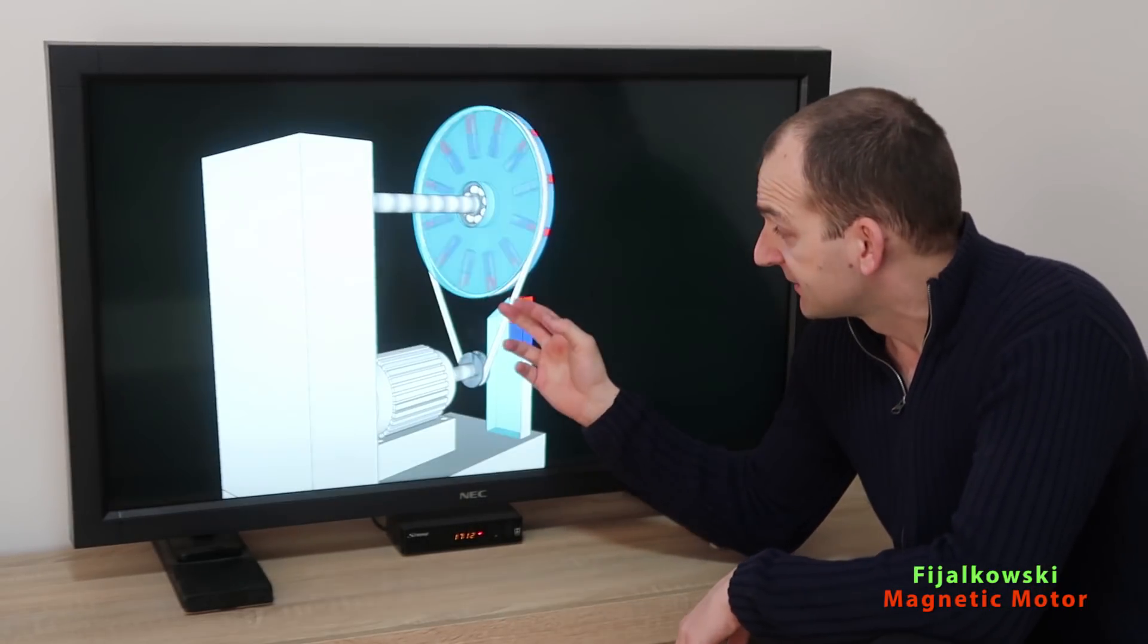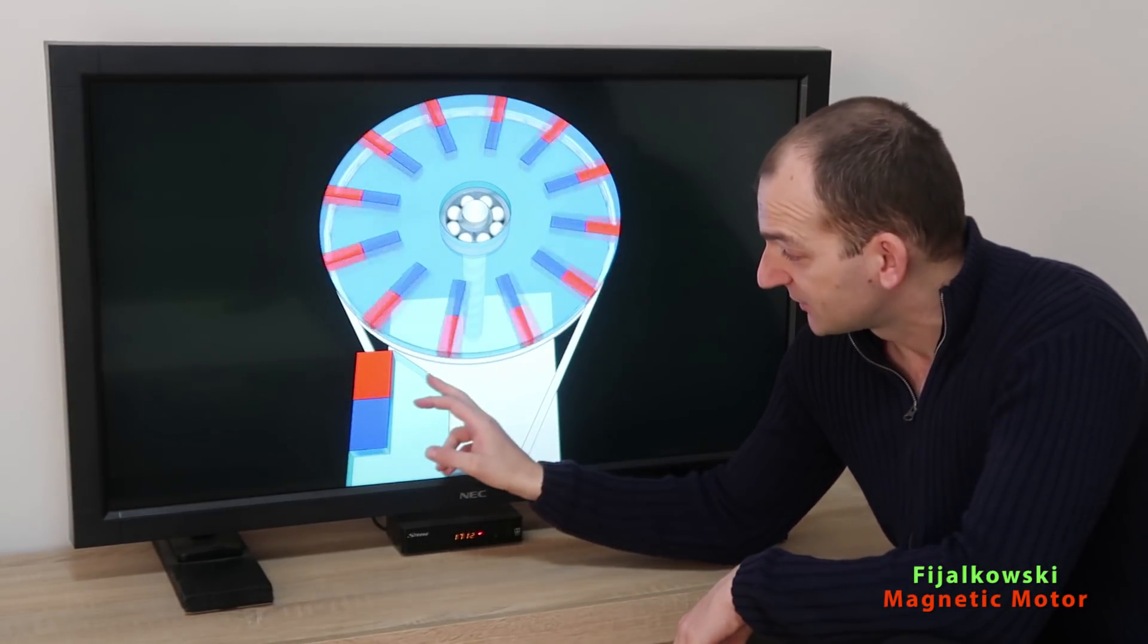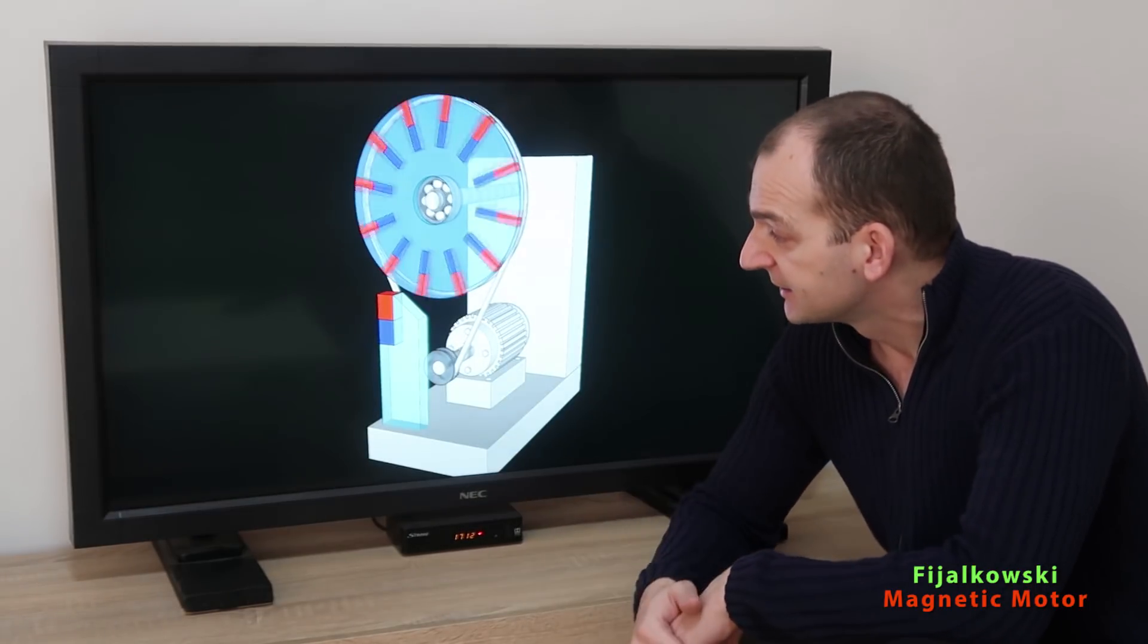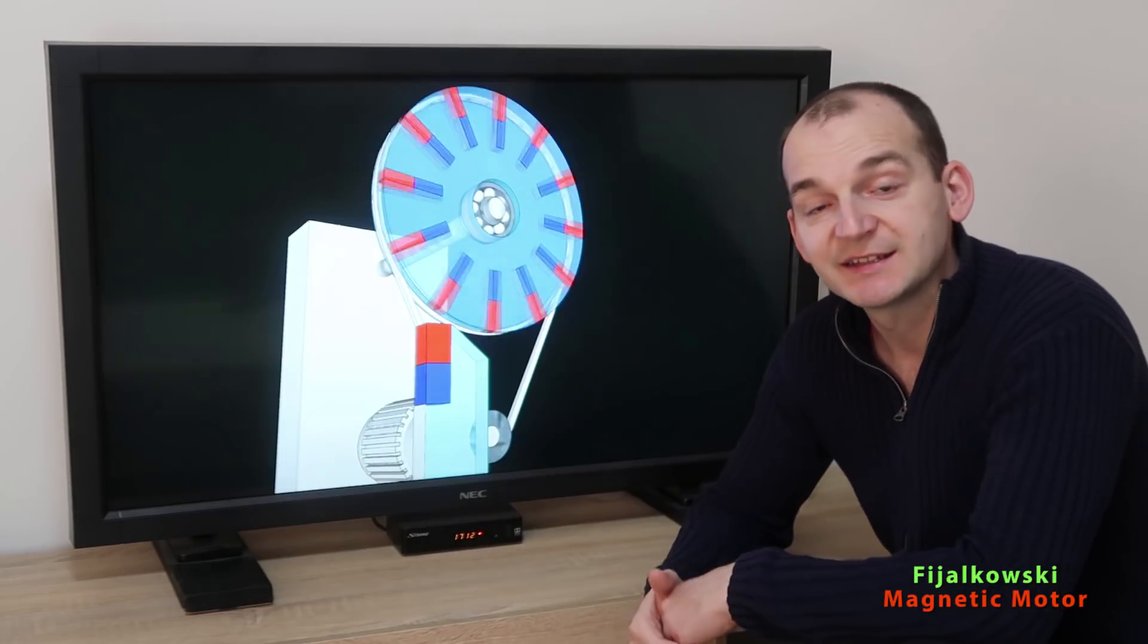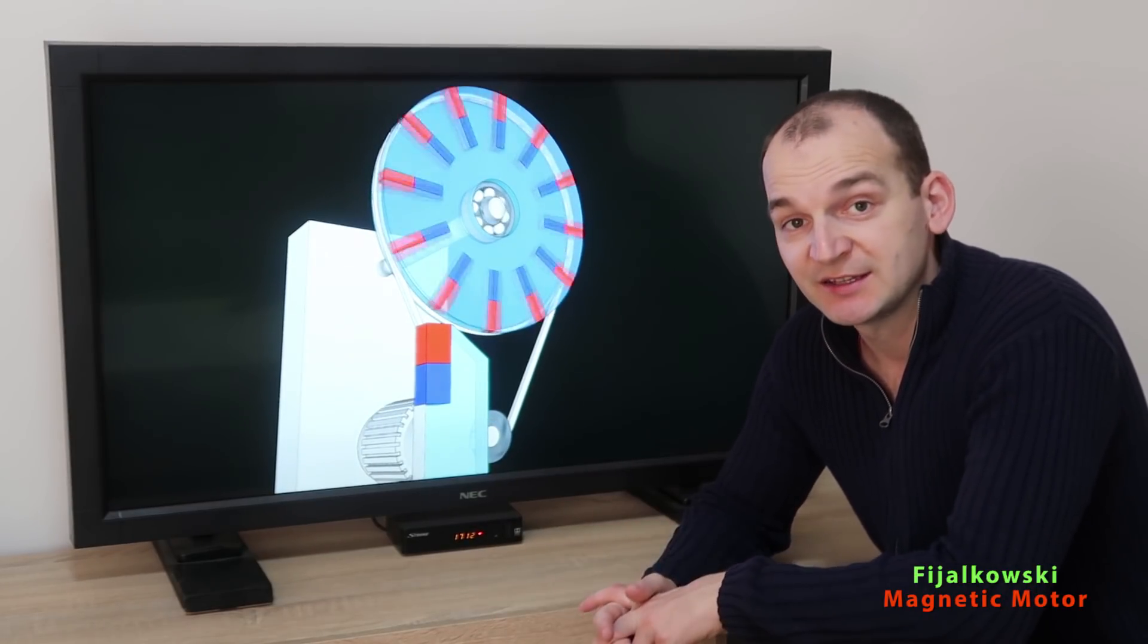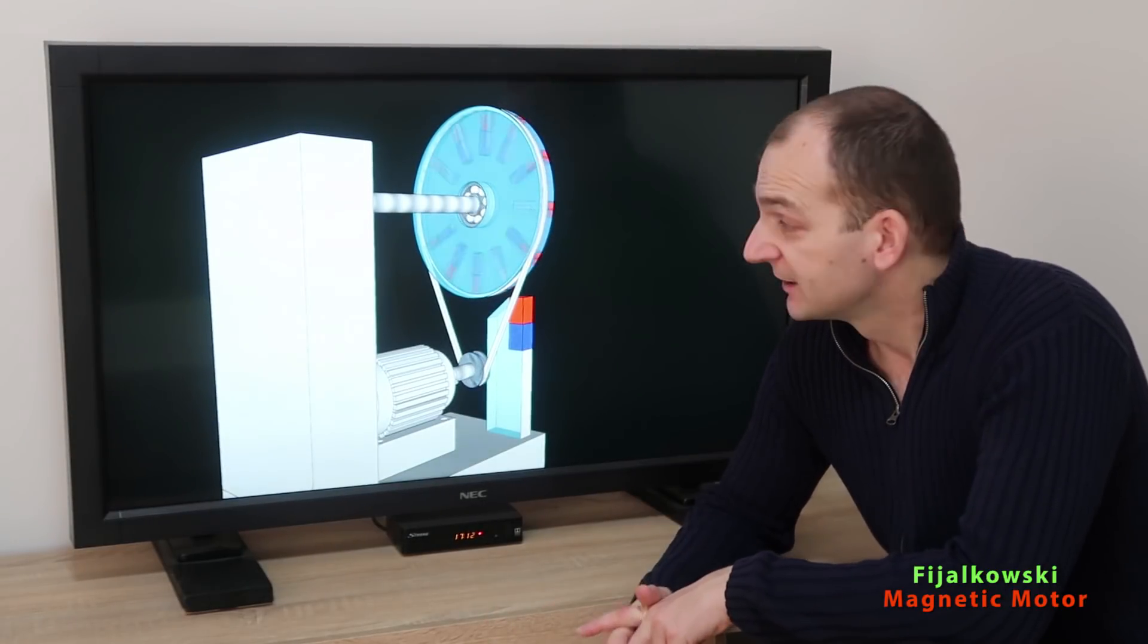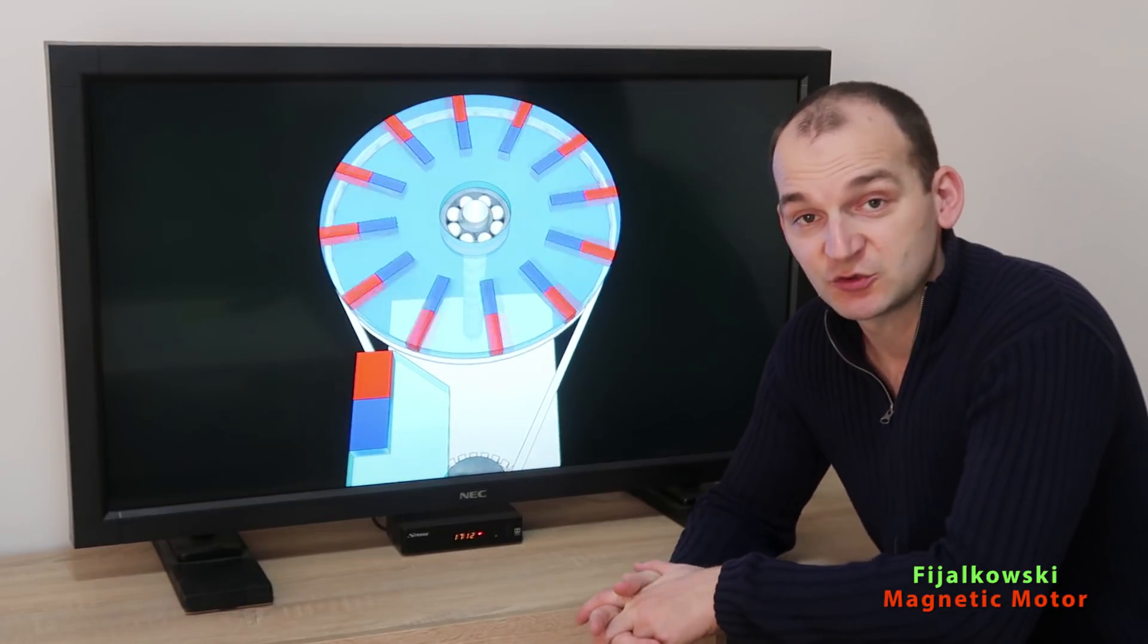And since rotor magnets are embedded in the shielding material, as well as the stator magnet is positioned to push the rotor, but also the opposing pole, this blue, it's very hidden inside of the magnetic shielding, this should work. At least conceptually and logically this should work.